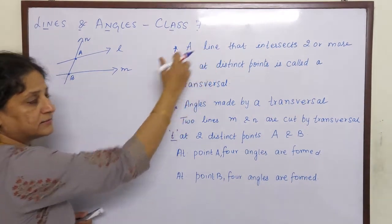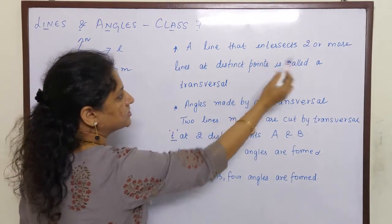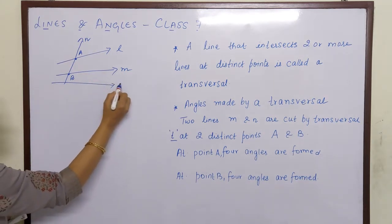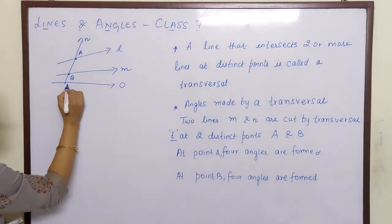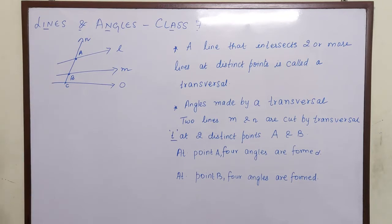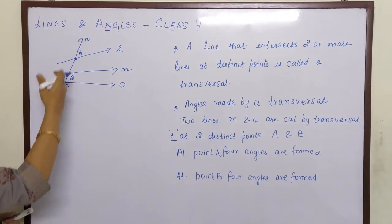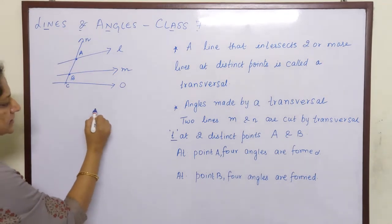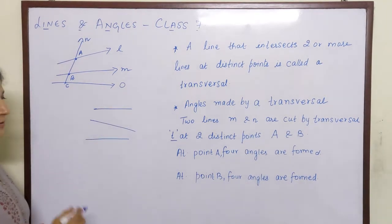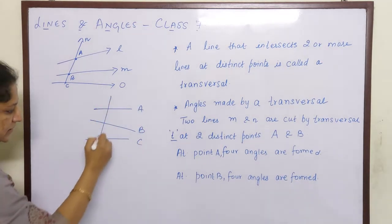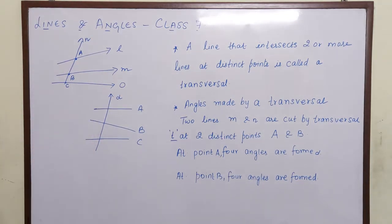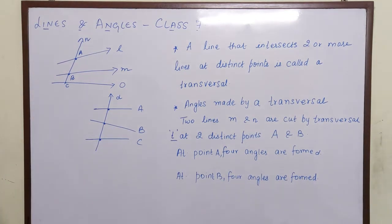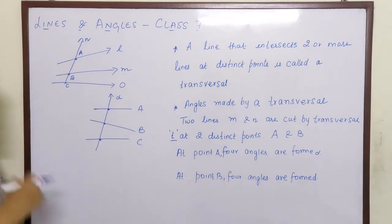A line that intersects two or more lines at distinct points is known as a transversal. For example, line N intersects line L at A, line M at B, and another line O at C — so A, B and C are distinct points where N cuts lines L, M and O. The transversal is line N. You can also have three lines A, B and C cut by transversal line D at three distinct points.